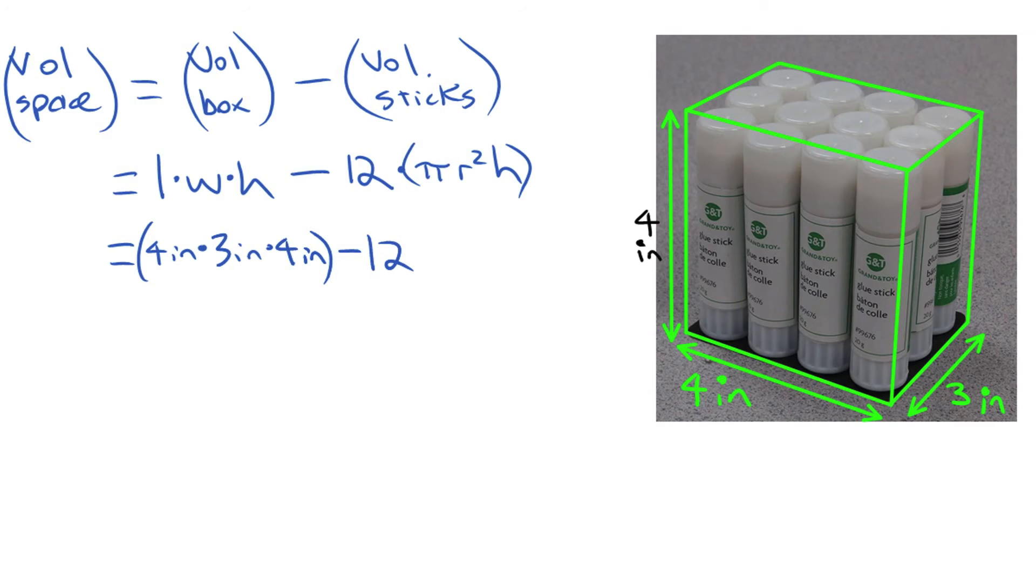And the only thing that we don't have already measured that we didn't measure was the radius of one of those glue sticks. But we're going to use the fact that we know they're tightly packed in here. Here's the four diameters across there. Not drawn very well, but they're actually all touching. All the glue sticks are touching each other here. So if that distance is four inches and there's four glue sticks all touching, the diameter of one of them has to be one inch. A diameter is one inch, which means the radius is half inch. So we can use that value here. Pi point five inches squared times our height, which is four inches.